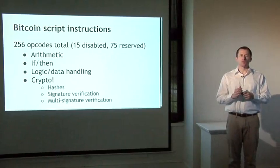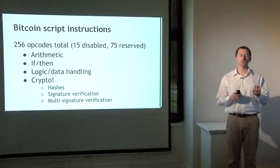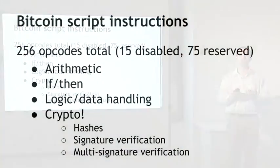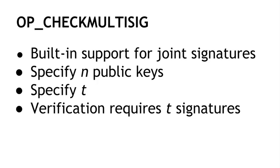The Bitcoin scripting language is very small — there's only room for 256 instructions because each one is given one byte. Of those, 15 are currently disabled and 75 are reserved, potentially to be assigned meaning later. Basic instructions include arithmetic, basic logic like if-then, throwing errors, and returning early. There are also crypto instructions: hash functions, signature verification, and a special important instruction for multi-signature verification called CHECK_MULTISIG — which is even more powerful than checking a single signature with one instruction.